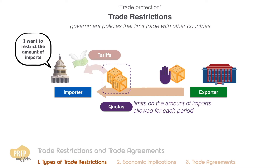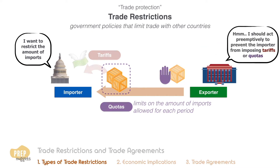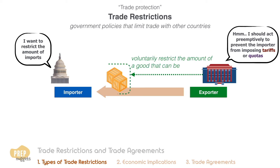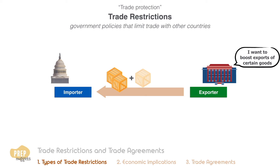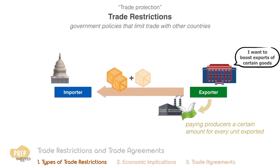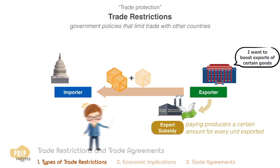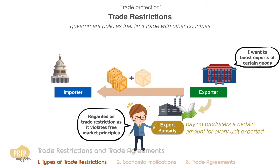Rather than letting their trading partners impose tariffs or quotas, some exporters voluntarily restrict the amount of a good that can be exported — these are called voluntary export restraints. Some governments also seek to boost exports of certain goods through export subsidies, usually by paying producers a certain amount for every unit exported. This is known as an export subsidy and is regarded as a trade restriction as it violates free market principles.